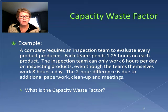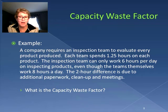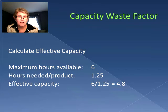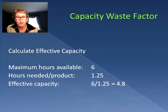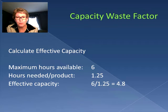We're going to first calculate the effective capacity. The effective capacity is what's actually occurring. We have six hours available, and each product needs an hour and a quarter. So we know that our effective capacity is 4.8 products.